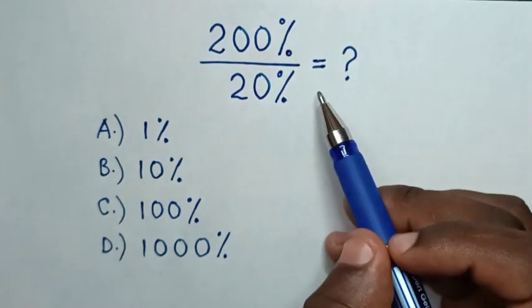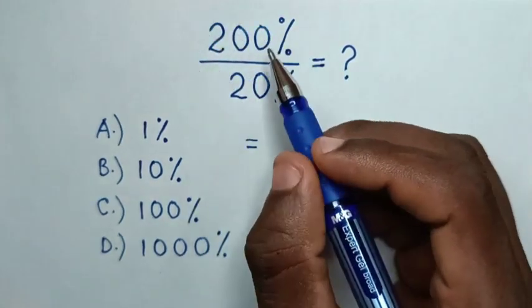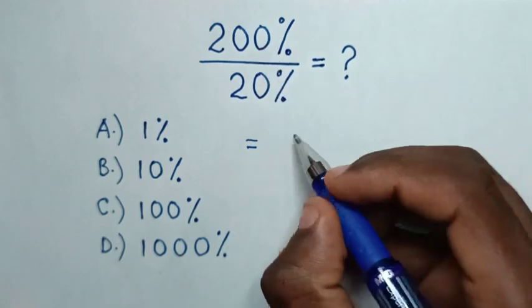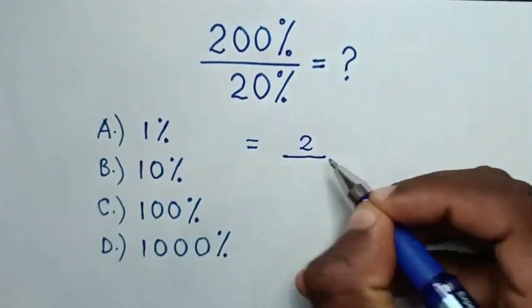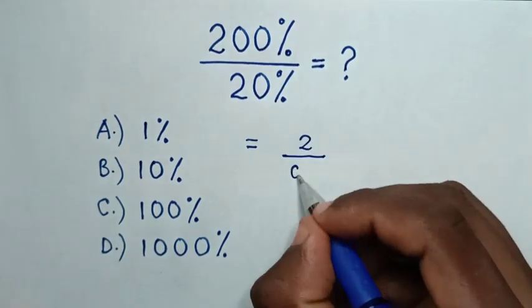So first, we convert both of these into decimal equivalents. So it will be equal to 200% is same as 200 divided by 100, which is 2, over 20% is same as 20 over 100, which is 0.2.